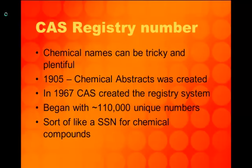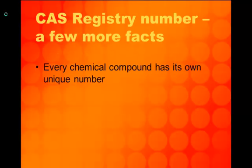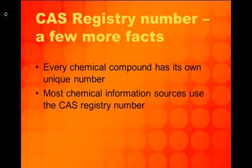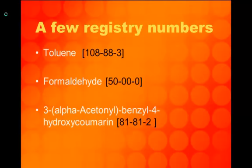The number of known chemical compounds is ever increasing — more than 12,000 are added each day. As of January 9, 2010, there were 56.5 million unique registry numbers. Each number is unique, and most chemical information resources index compounds by the CAS registry number. The format is always a numeric identifier that can contain up to ten digits, divided by hyphens into three parts, and often found enclosed in brackets. The first set of numbers can have multiple digits, while the second and third are two digits and one digit respectively. Here are some examples of compounds and their registry numbers.